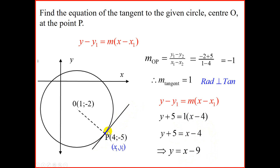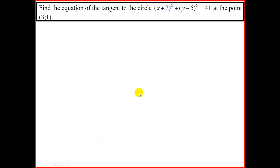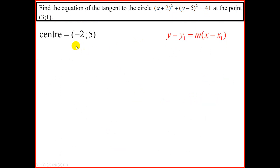Remember, a tangent touches the circle only once. Let's do one more example: find the equation of the tangent to the circle (x + 2)² + (y − 5)² = 41 at the point (3, 1). From the equation of the circle, we can find the center, which is (−2, 5).